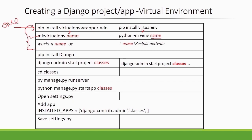The next step is to activate the virtual environment. The activation command depends on how you installed it. Once activated, you will install Django within your virtual environment using `pip install Django`. Either approach you follow, the command to install Django remains the same.